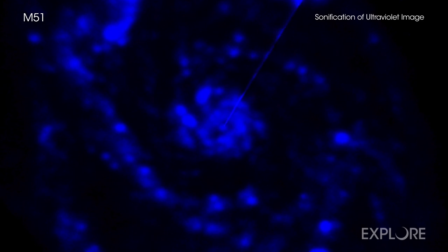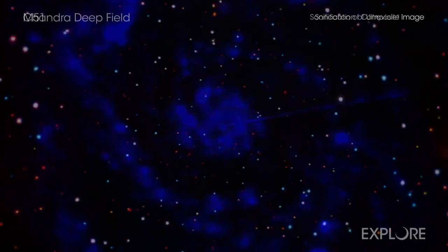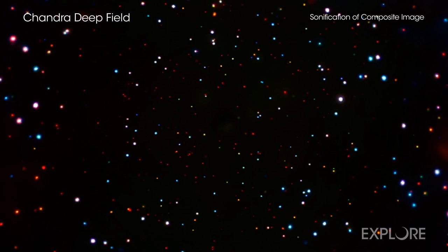These three images include some of the most famous objects associated with Chandra. The first is the Chandra Deep Field, which contains some 7 million seconds worth of the telescope's observing time.